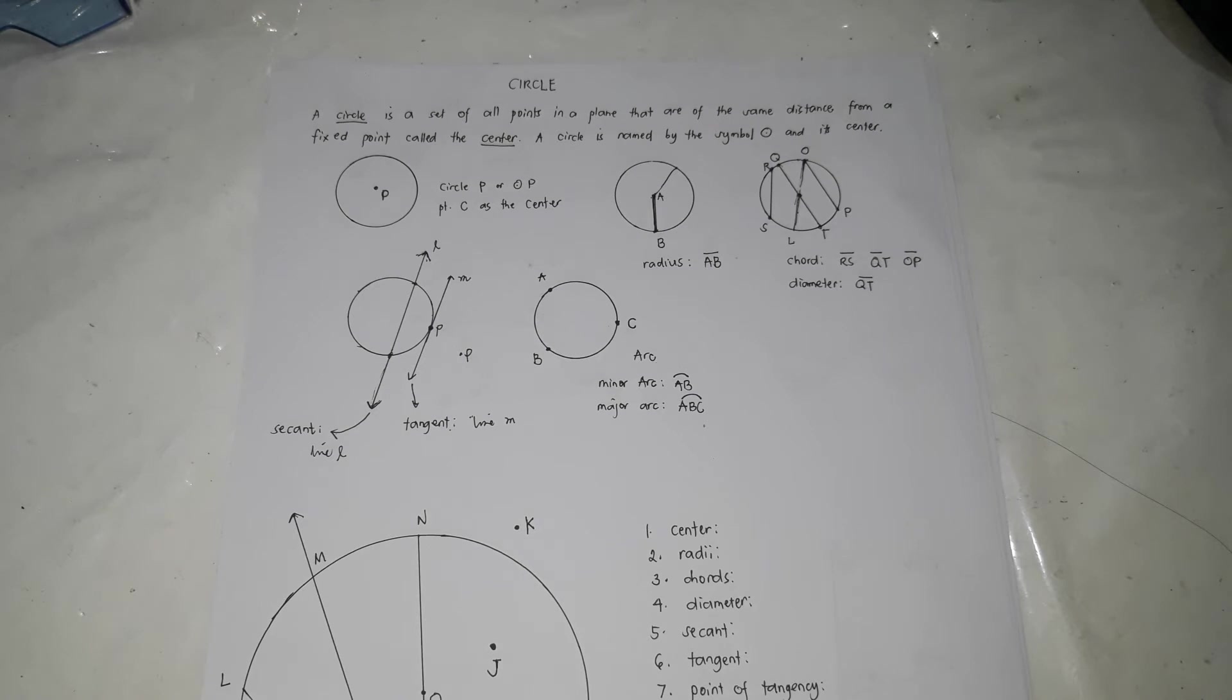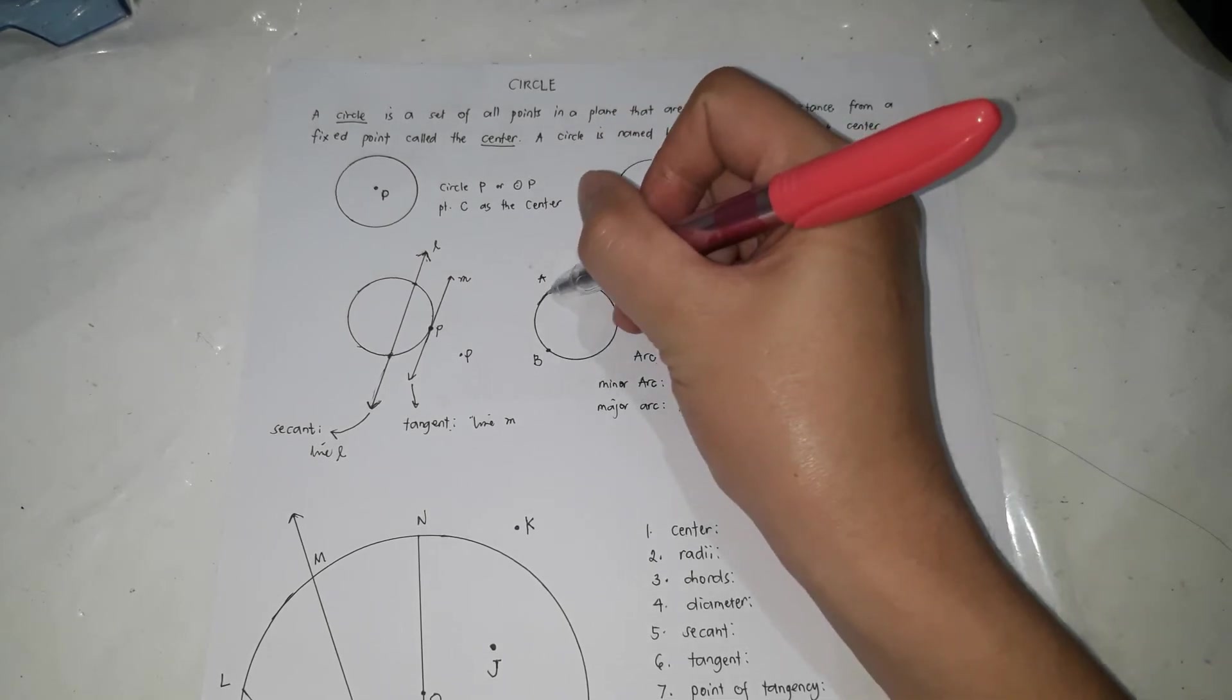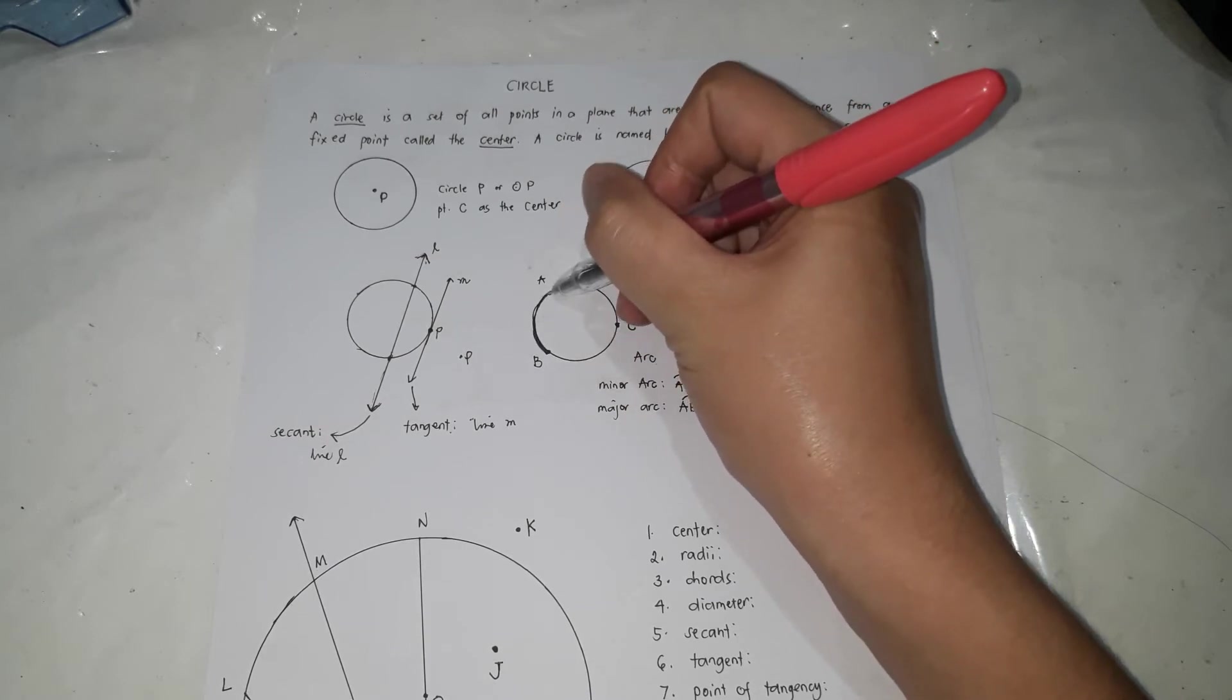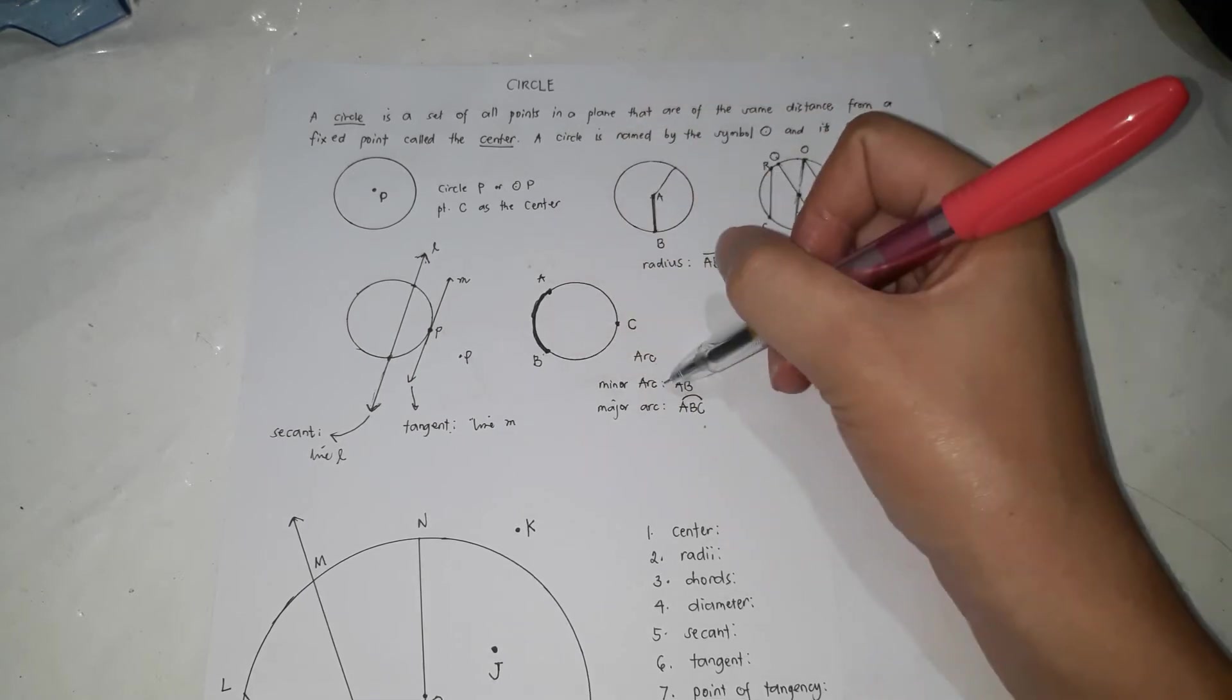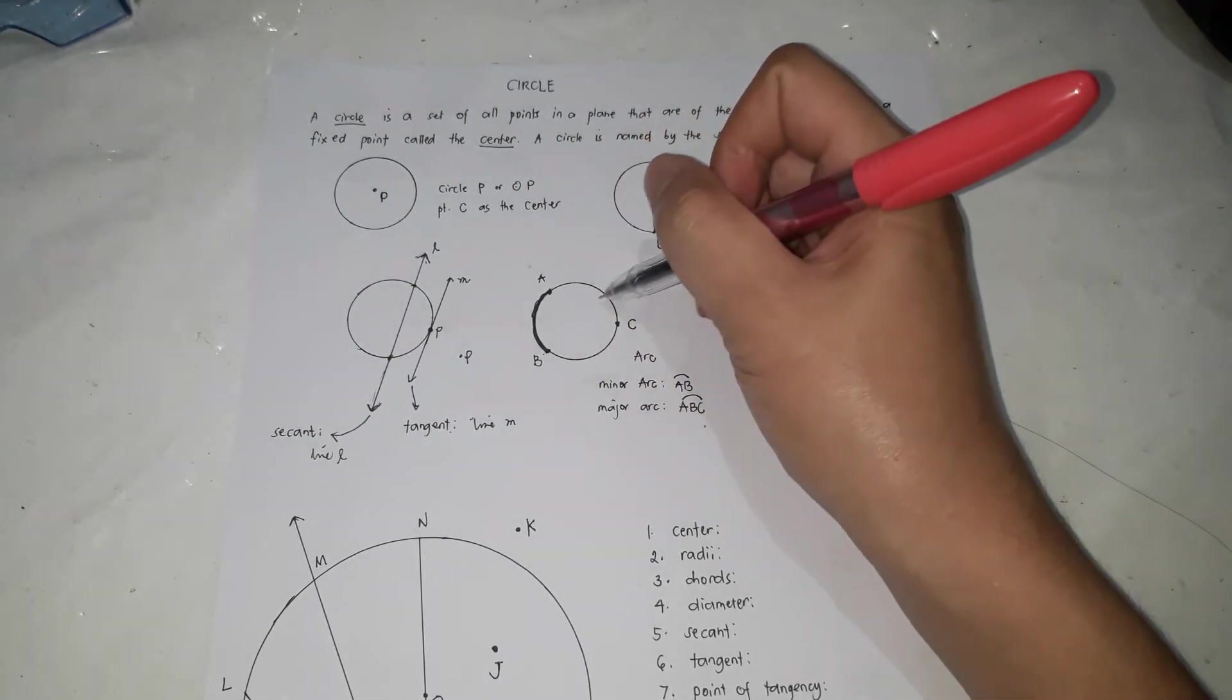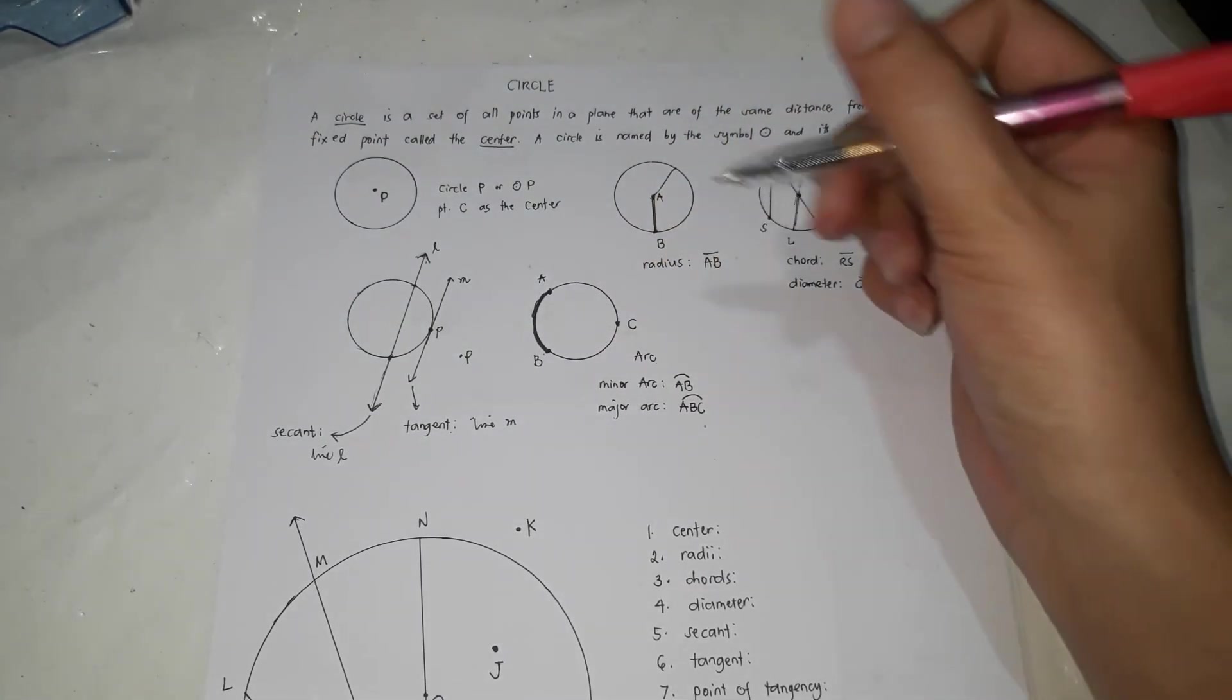Next thing we need to know is the arc. Arc is a curved line which is a part of a circle. For example, if you only take note of this part, just this part of a circle. That's called arc AB. So this is a minor arc because it's a smaller arc. Usually if it is less than 180, that's a minor arc. If it is greater, then that's a major arc.